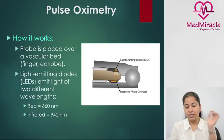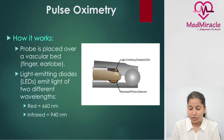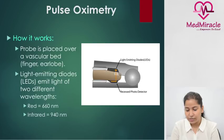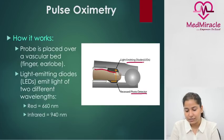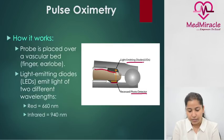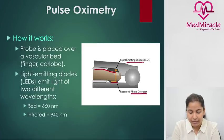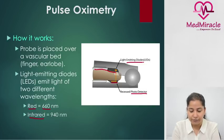How does pulse oximetry work? The finger fits inside the monitor, which has a light emitting diode and a photo detector present in the lower surface. The light emitted belongs to two different wavelengths: red at 660 nanometers and infrared at 940 nanometers.